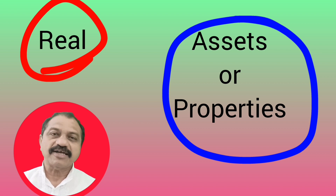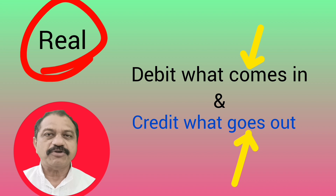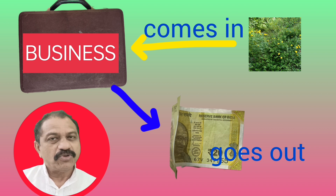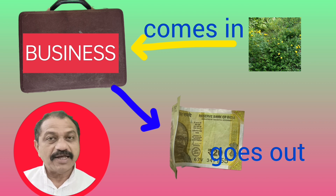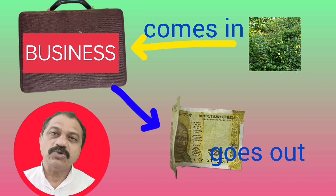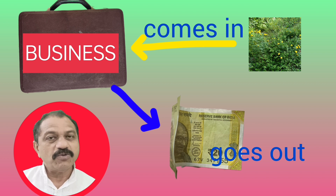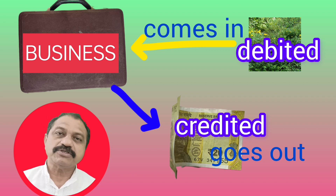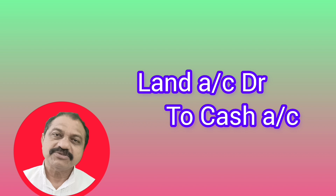The rule for real accounts is: debit what comes in, credit what goes out. Suppose a land is purchased for the business for cash. The two affected accounts are land account and cash account — both are real accounts. Land came into the business, therefore land account is debited. Cash goes out of the business, therefore cash account is credited. The journal entry is: Land Account Dr. To Cash Account.